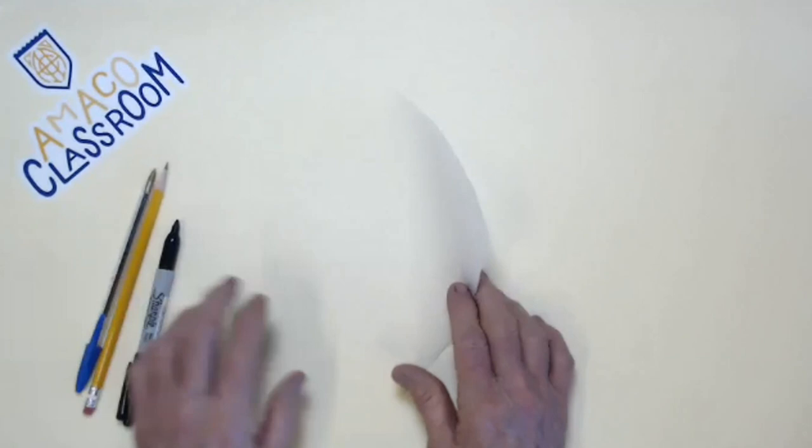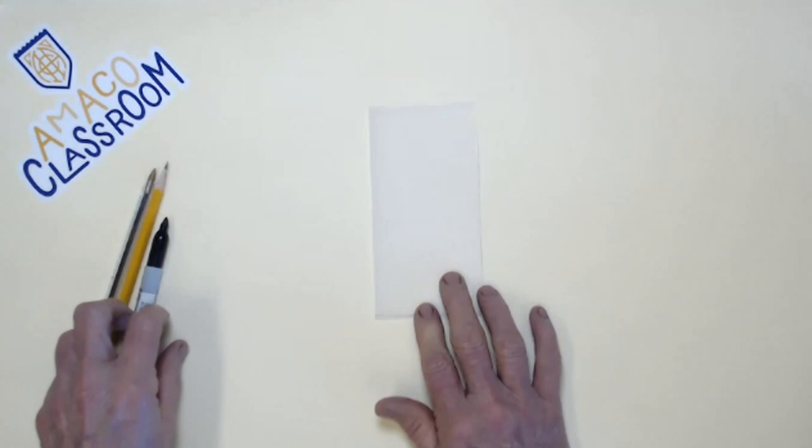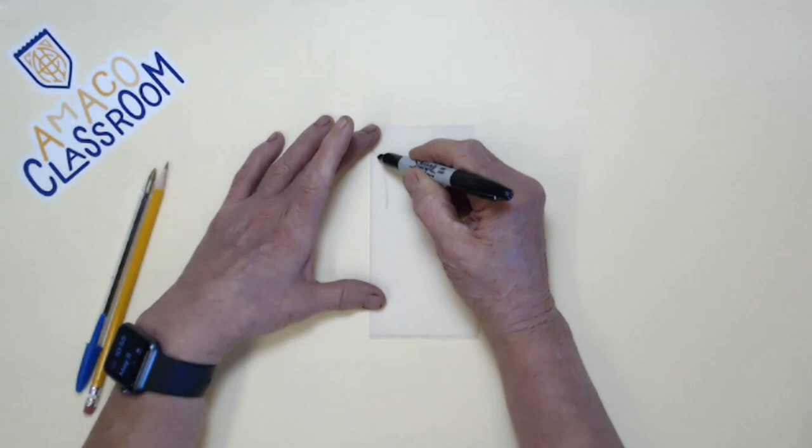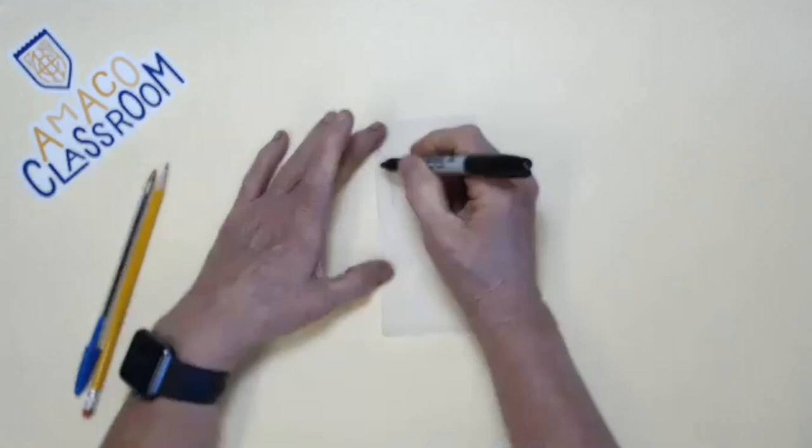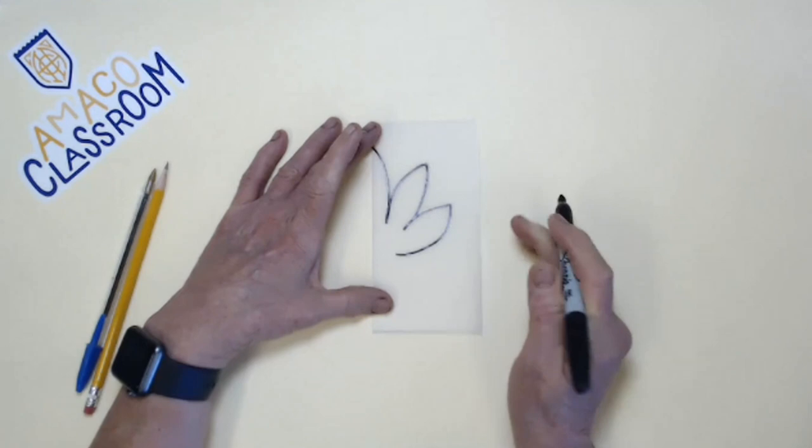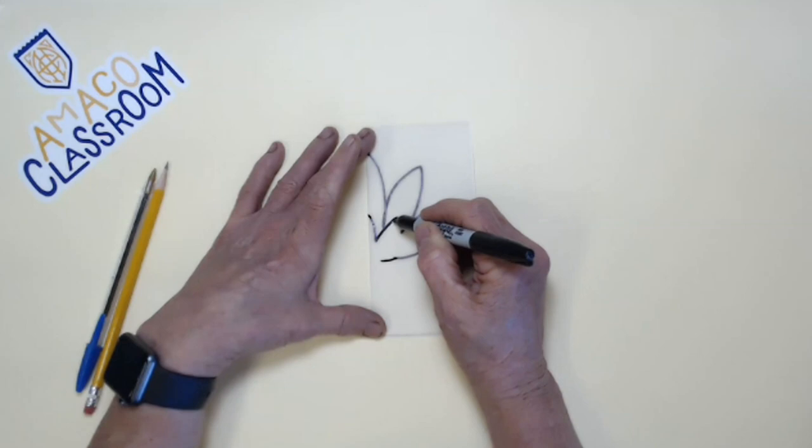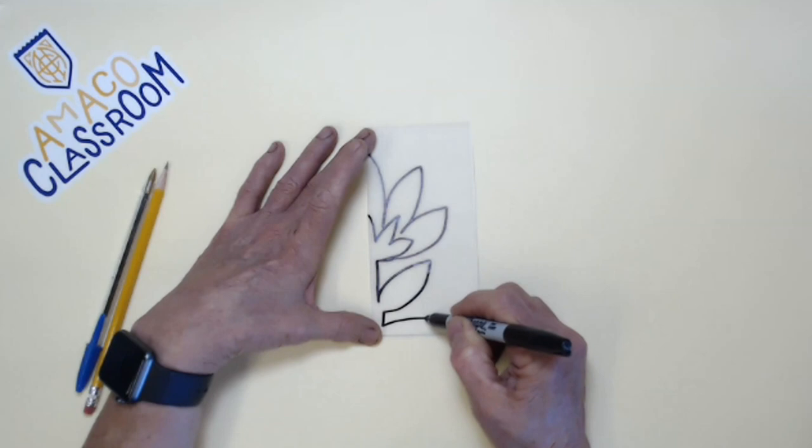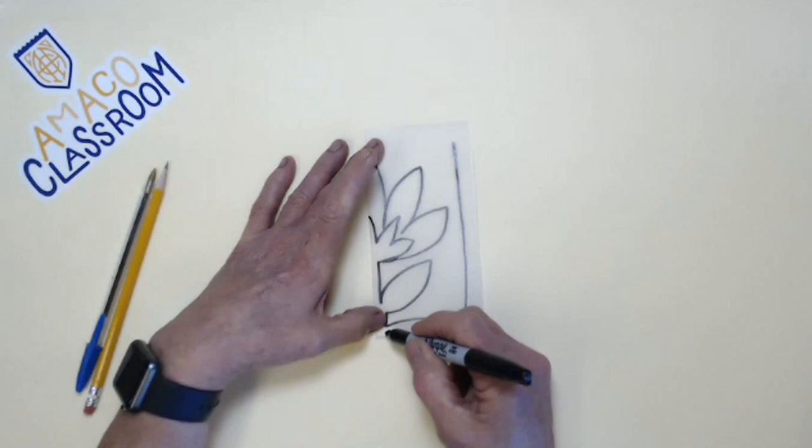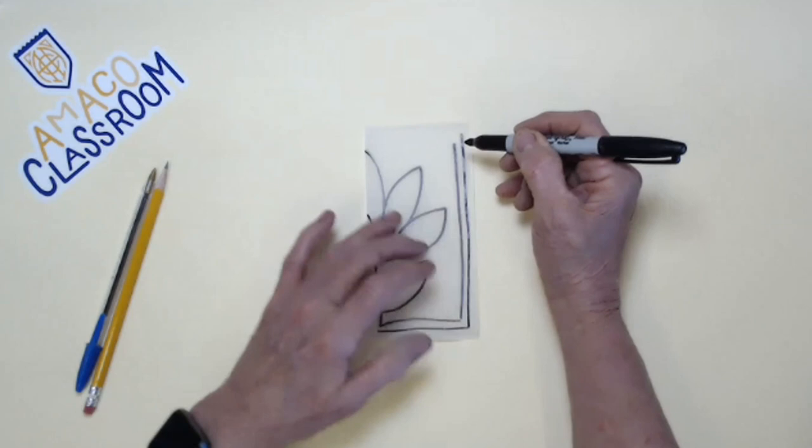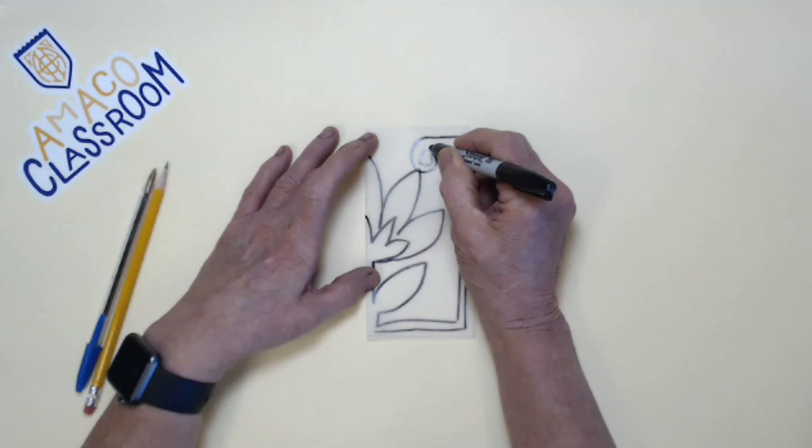What we're going to do first is take the tracing paper, fold it in half, take the Sharpie marker, and draw a design onto the tracing paper. You're drawing just half of a design because we've got it folded. We want the center of the design to be there, because kids always have a hard time with symmetry. So we're going to kind of do symmetry cheating. You want to keep it fairly simple at this point, because if you want to add detail, it's easier to do it later than at the beginning.